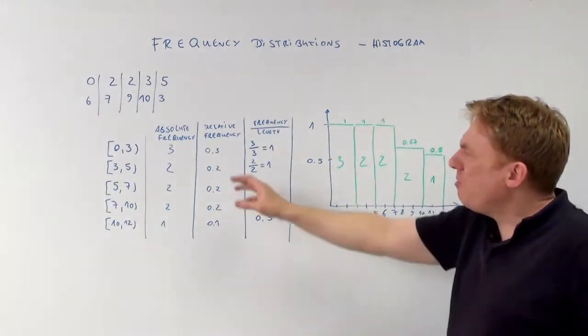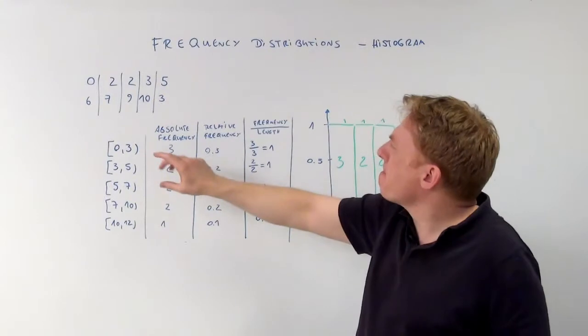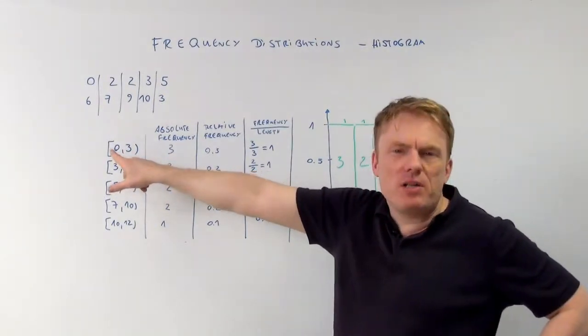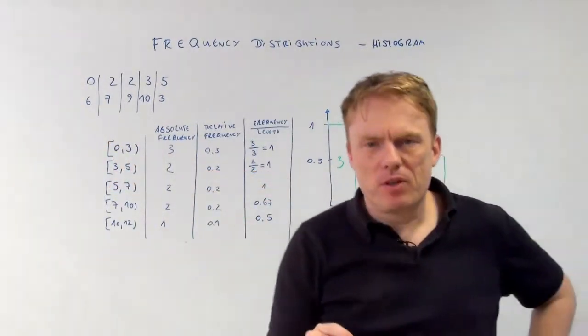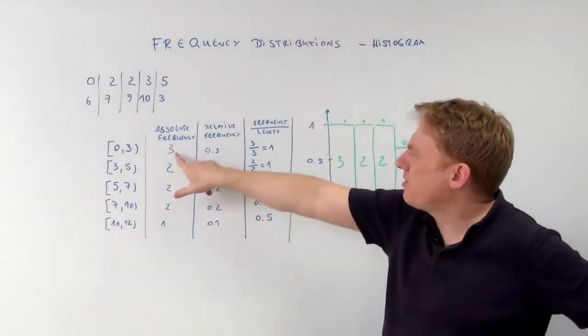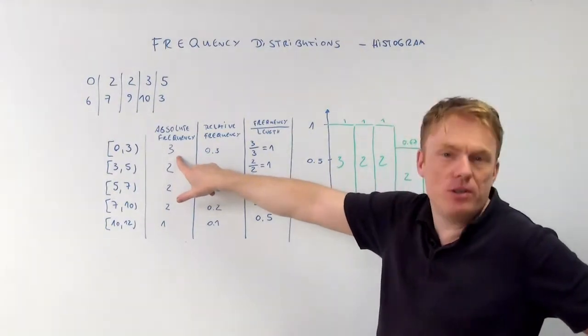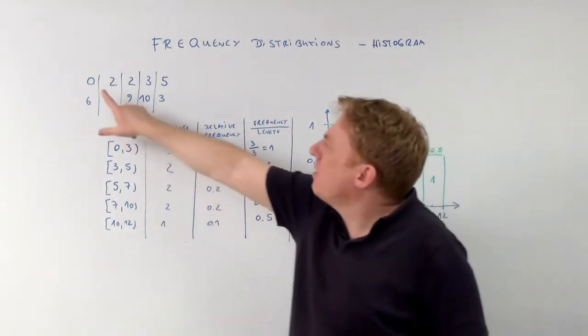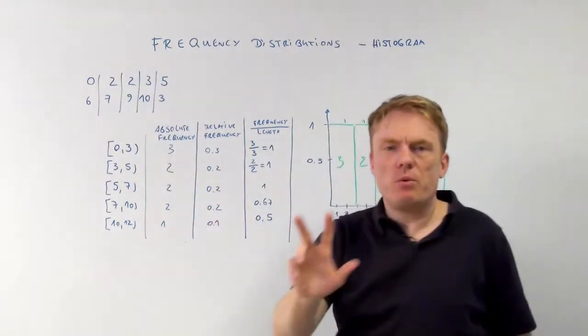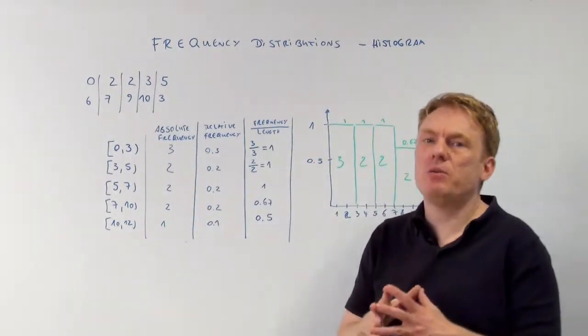So how many values occur in those ungrouped data that are between 0 and 3? 0 included, 3 excluded. The answer is 3, because it is 0, it is 1, it is 2, it's not 3. 0, 2, 2, which means three values that are included in the first interval from 0 to 3.